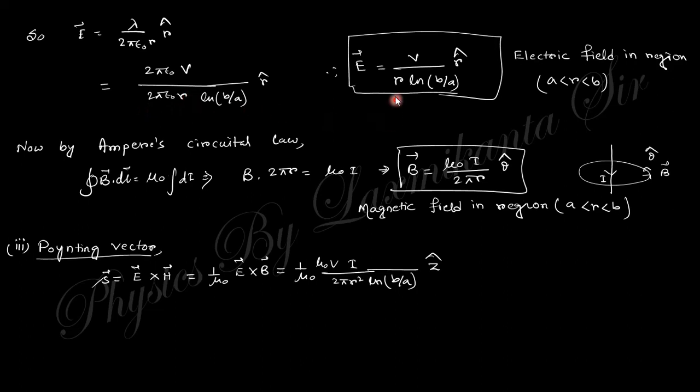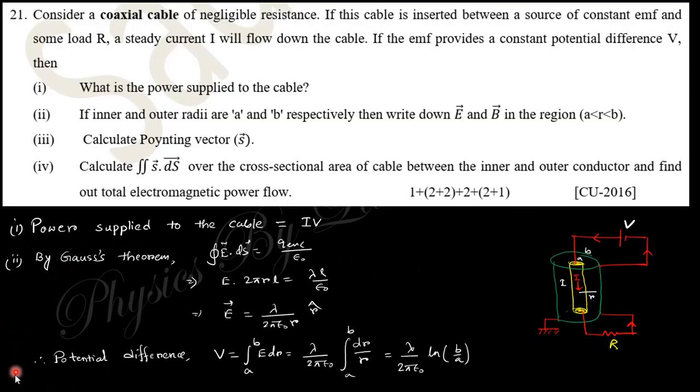From here you can substitute for lambda. If you substitute this lambda, you can easily find out the electric field in terms of the applied EMF. And if you apply Ampere's circular law, then you can finally obtain the magnetic field.